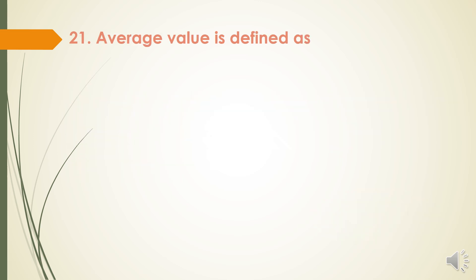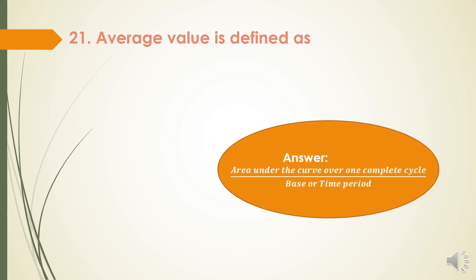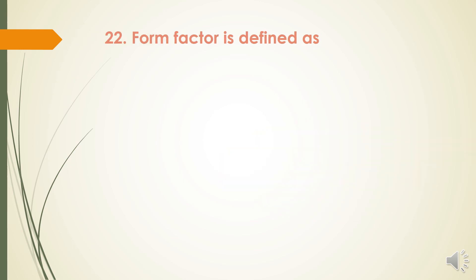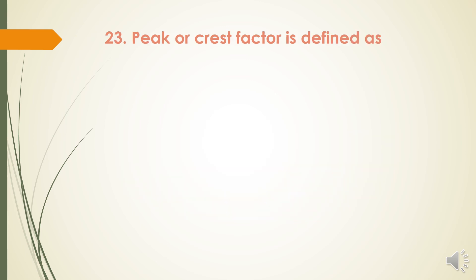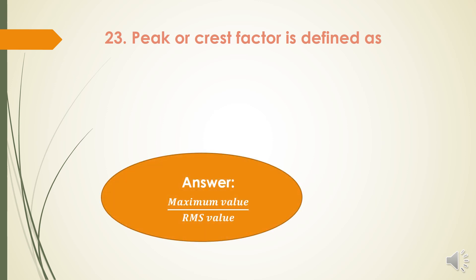Next question: Average value is defined as the area under the curve over one complete cycle divided by the base or time period. Next question: Form factor is defined as RMS value divided by average value. Next question: Peak or crest factor is defined as maximum value divided by RMS value.